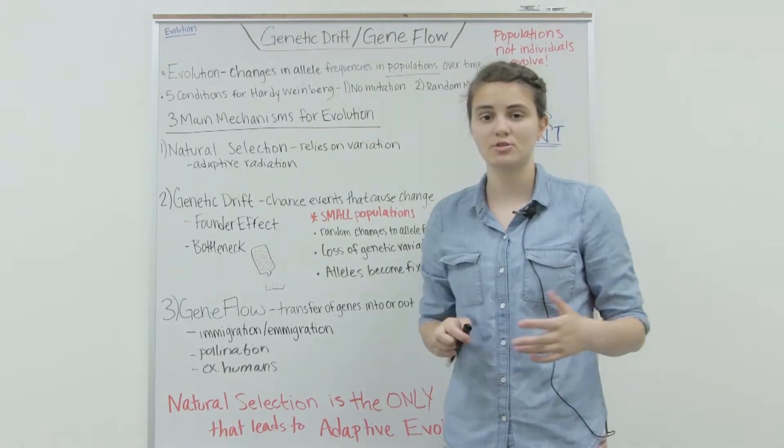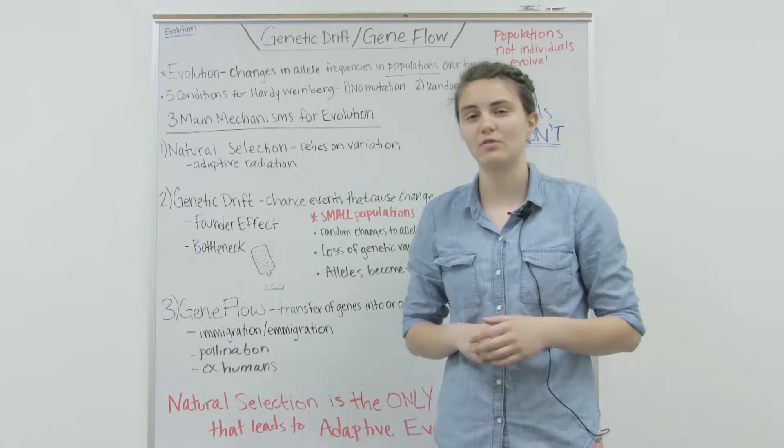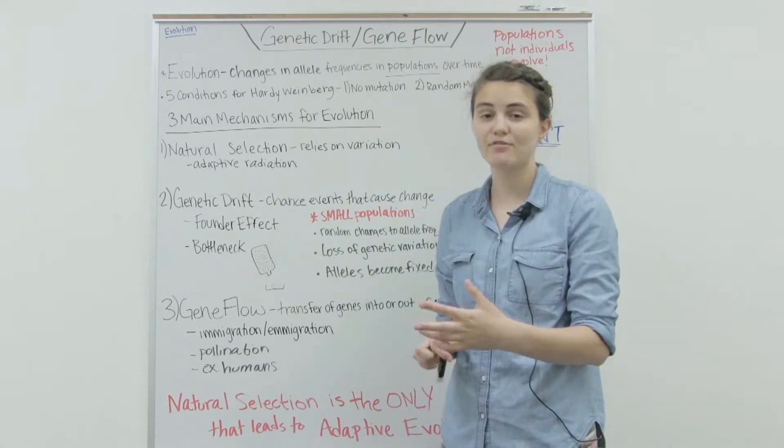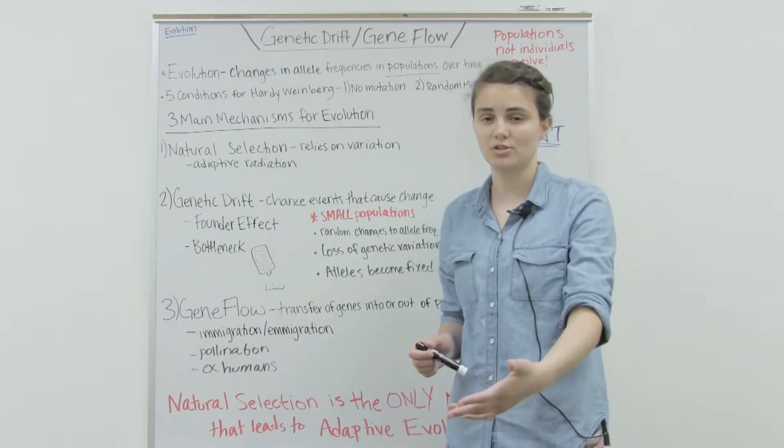Certain individuals in the population, because there's variation, will have traits or alleles that are more beneficial to their survival than other individuals. As a result, the individuals that have those traits will survive and be able to reproduce and pass them on to their offspring.